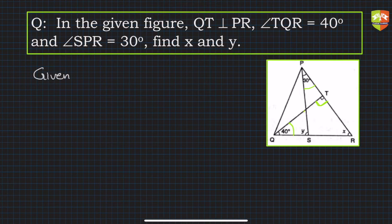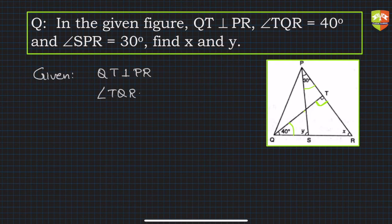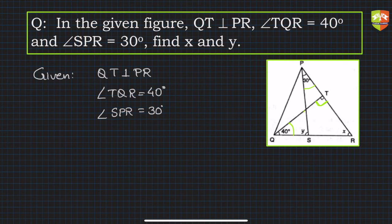So convention is to write first given what is given. So all that's mentioned in the problem: QT is perpendicular to PR, angle TQR is 40 degrees, and angle SPR is 30 degrees. To find: we need to find values of x and y.